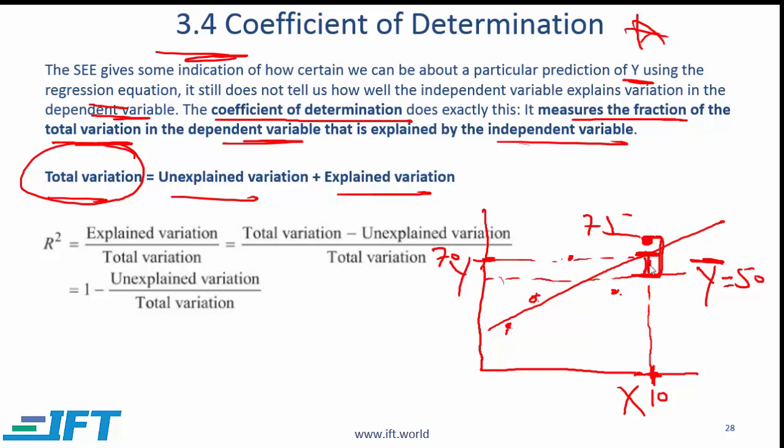One part is this which is explained by the regression. That's called the explained variation. Why is it called explained? Because it is explained by the regression.